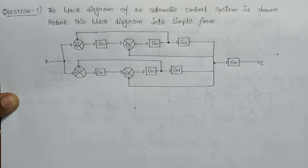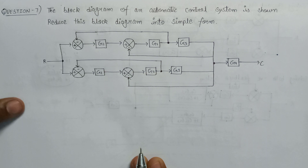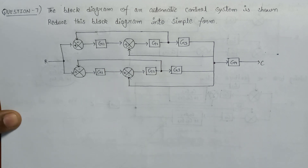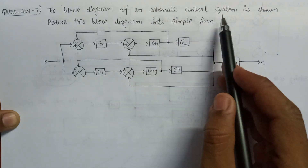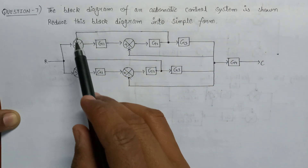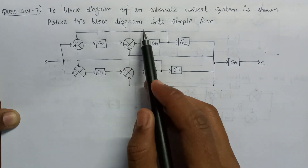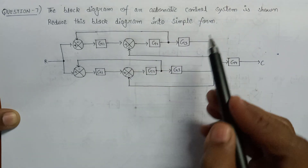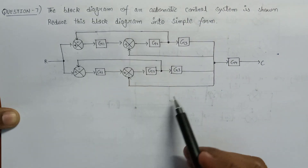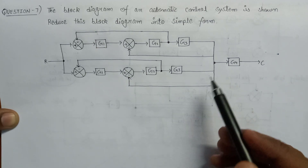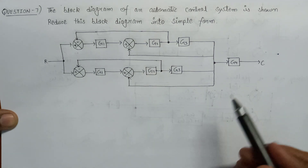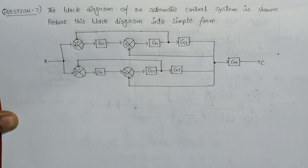Welcome all. In this lecture we are going to solve an example based on block diagram reduction technique. The block diagram of an automatic control system is shown and we just need to reduce the block diagram into simpler form. By the help of block diagram reduction technique we have to reduce it, so let's start.